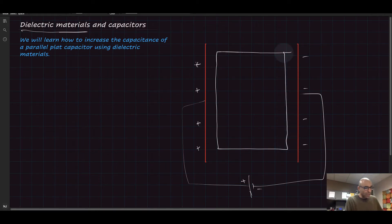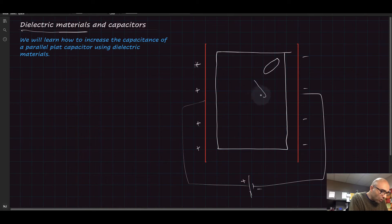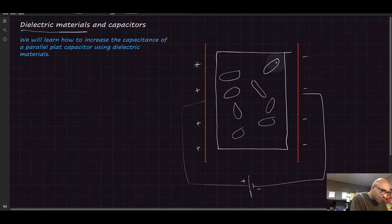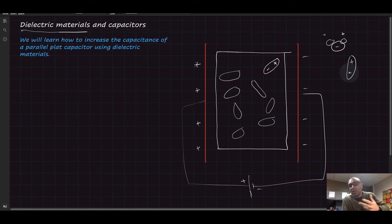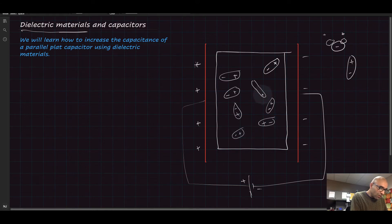We place the dielectric material as a slab between the two parallel plate capacitors. Now, when uncharged, dielectric materials form what we call dipoles. A dipole is a charge configuration — for example, water is a dipole because it has oxygen and two hydrogen atoms; the oxygen is negative and the two hydrogen atoms are positive. All these insulating materials have dipoles in them, and those dipoles are randomly organized — positive on one side, negative on another — and they basically mean nothing to the material in that state.